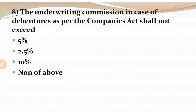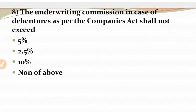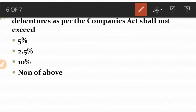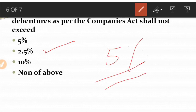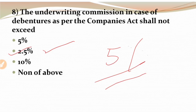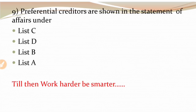MCQ 8: Commission percentage for underwriting. You need to remember the commission percentages: for shares the commission percentage is five percent (5%), and for debentures the commission percentage is 2.5%. So the right answer for debentures is 2.5%. Remember - shares: 5%, debentures: 2.5%.